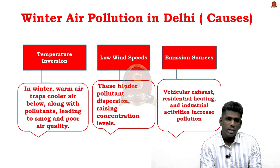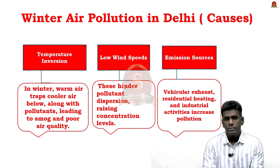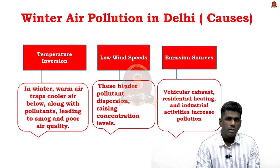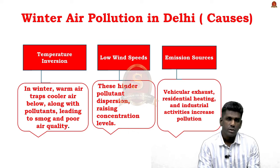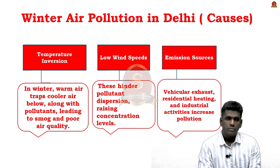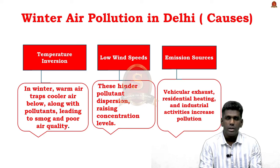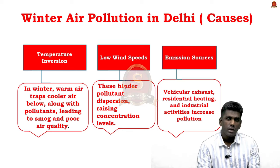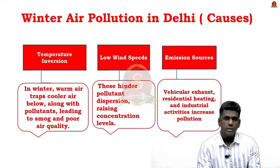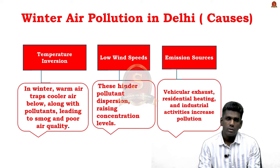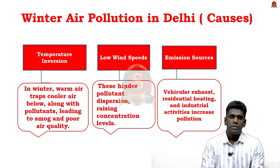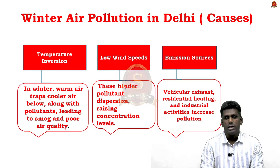Normally, air near the ground is warmer, and as you go to higher heights the air becomes cooler. But during temperature inversion this is reversed. A layer of warm air traps the cooler and denser air below it, which traps pollutants close to the ground, causing smog and poor air quality. This is a major reason for winter pollution in Delhi.